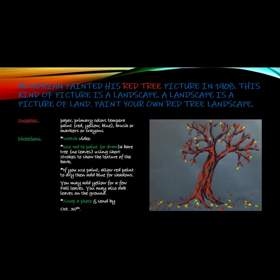If you use paint, allow the red paint to dry, then add blue for shadows. You may add yellow for a few fall leaves. You may also dab the leaves on the ground.